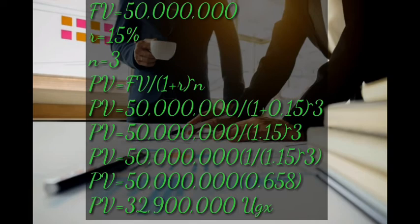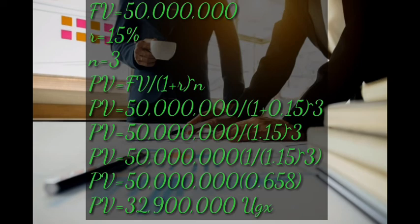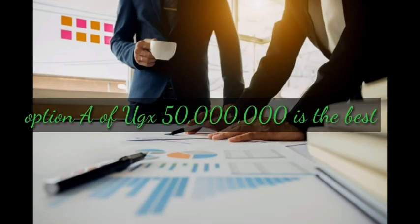Multiplying 0.658 by 50 million gives 32 million nine hundred thousand UGX. So the present value of 50 million three years from now is 32.9 million. Levinia was given two options: 50 million three years from now, or 25 million today. Since the present value of 50 million is 32.9 million, which is greater than 25 million, option B — receiving 50 million three years from now — is the best choice.